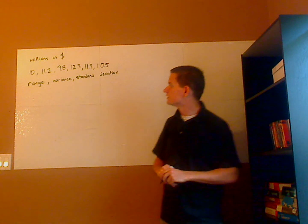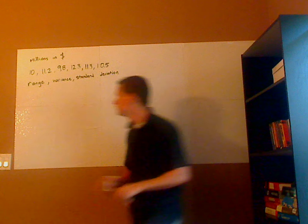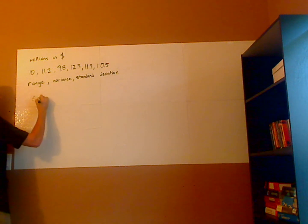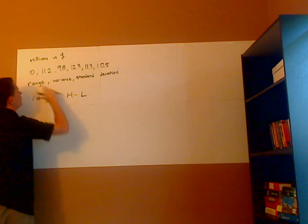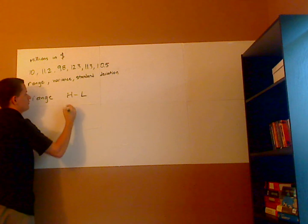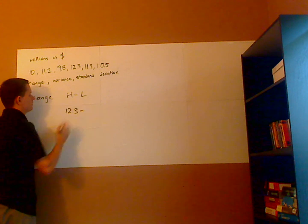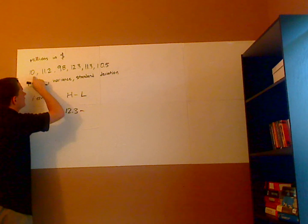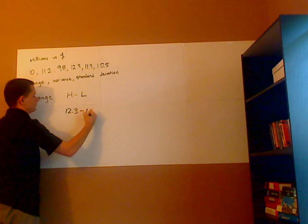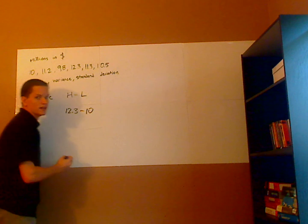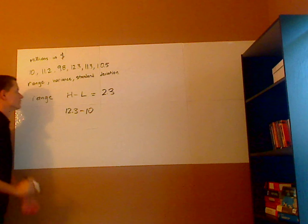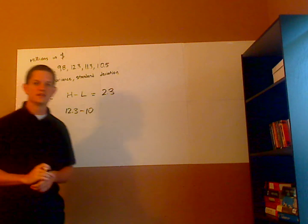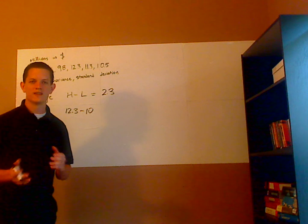Alright, to calculate the range is very easy. Range is just high minus low, so my high is 12.3 million. I'm going to subtract that minus the low which is 10, and so that gives me a range of 2.3 million dollars.